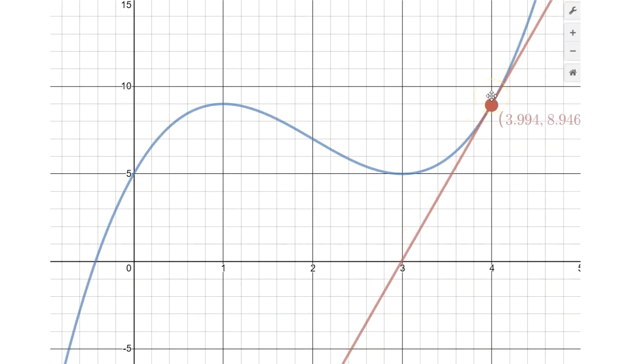So what we're interested in though is where the slope of the tangent line changed from positive to negative and then later negative to positive.